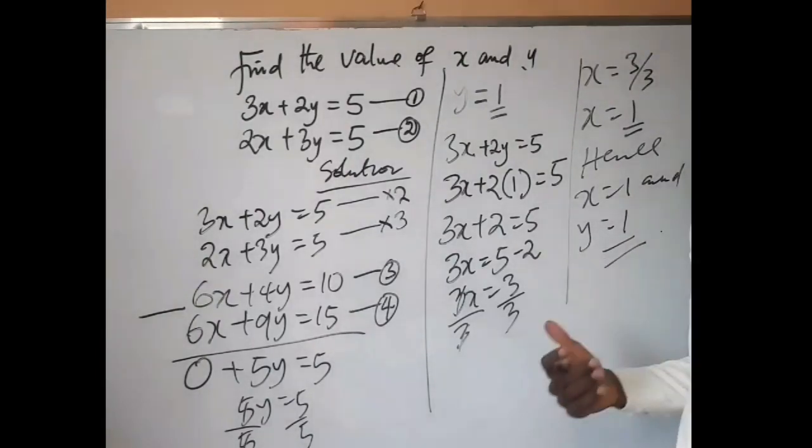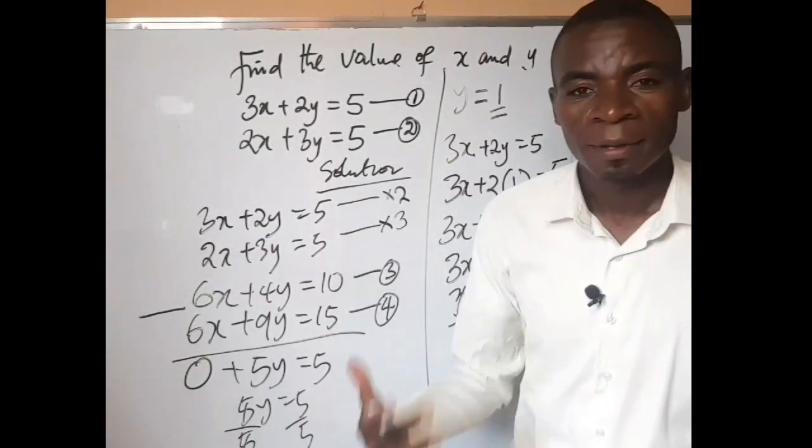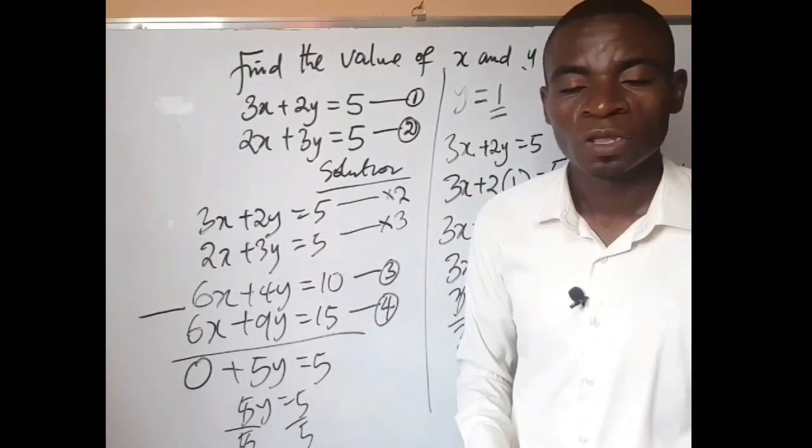Meaning that hence our x is equal to 1 and our y is also equal to 1. And that is it. This is the solution of this very particular simultaneous equation.